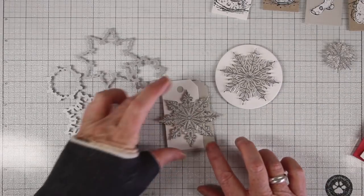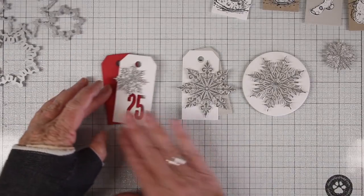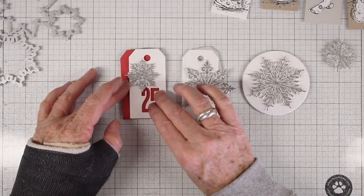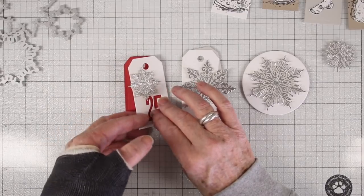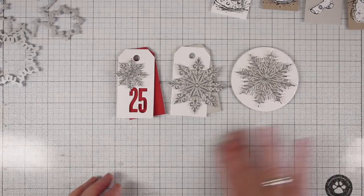I've also done a couple of the tags using some of the larger swirly snowflakes and then I've used the 25 that comes with the sidekick and also some red paper to put underneath. I'll stack those together along with a snowflake and also add a little extra snowflake that I'll stack on top.